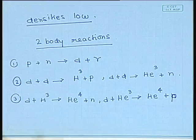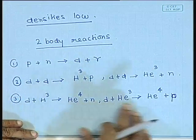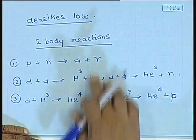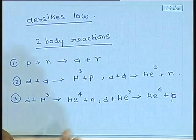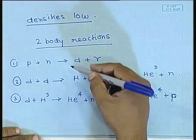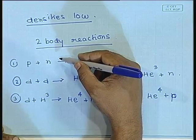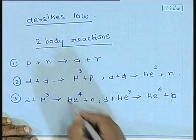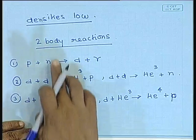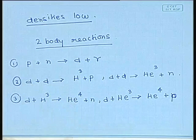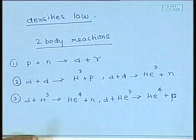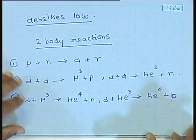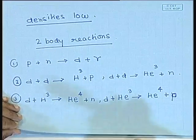Helium-4 has the highest binding energy per nucleon amongst all of these, so the heavy nuclei here have to be formed by a sequence of these reactions. Helium-4, for example, would have to be formed by a sequence of these three reactions. Let us consider the first stage in this whole process: the formation of deuterium.